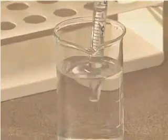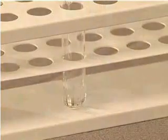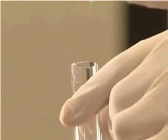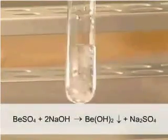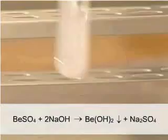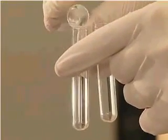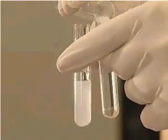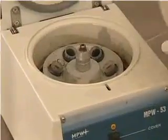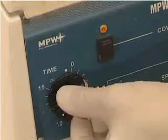Let us investigate the amphoteric properties of beryllium hydroxide by means of an experiment. We add about 5 cubic centimeters of beryllium sulfate solution to a tube, and then add sodium hydroxide solution drop by drop until a precipitate falls. We divide the suspension obtained into two parts, and separate the precipitate of beryllium hydroxide from the solution by centrifuging.